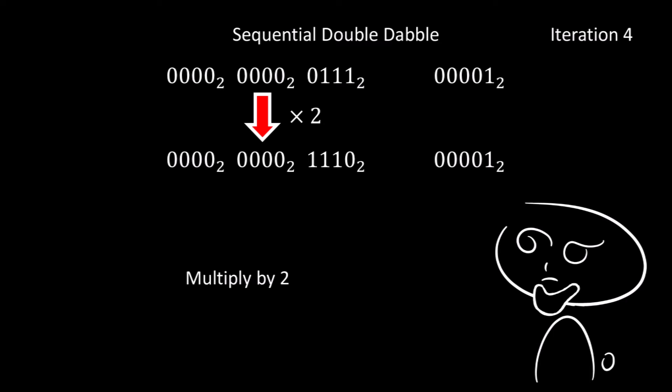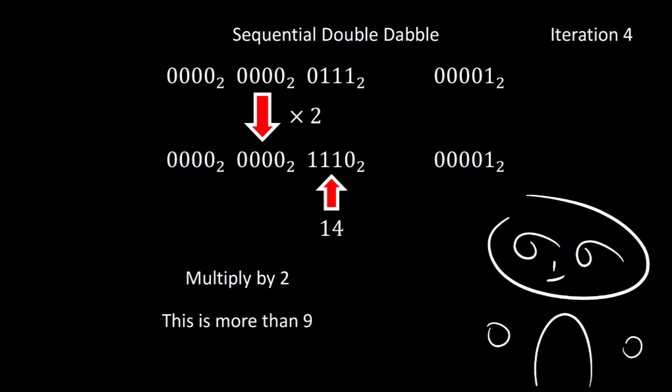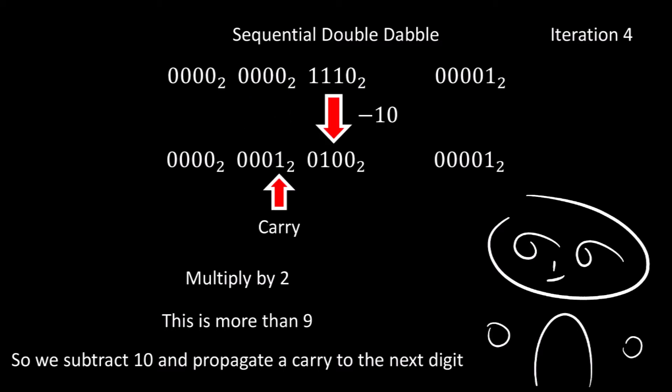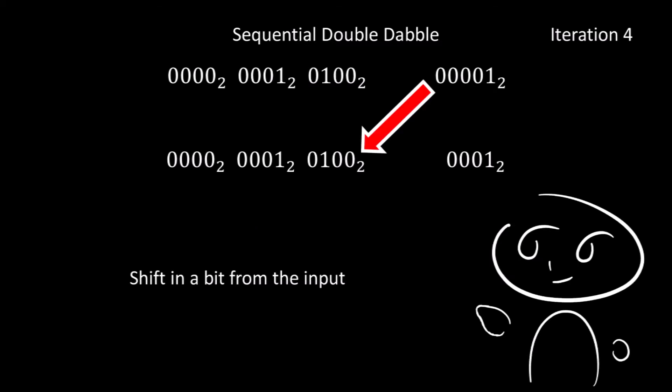For the fourth iteration, we multiply by 2, so 7 multiplied by 2 gives us 14. Since 14 is more than 9, we must subtract 10 and propagate a carry into the next digit. So 14 subtract 10 gives us 4. Then we insert a carry into the second digit. Then finally, we shift in another bit from our input. This time it's a 0, so the 4 stays as a 4.